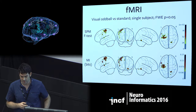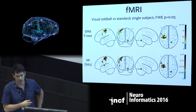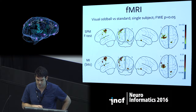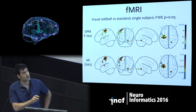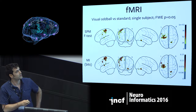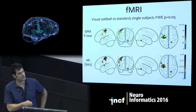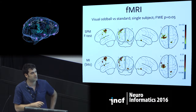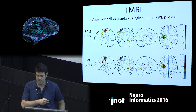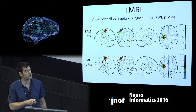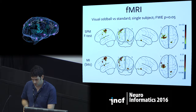Most of the examples I'm going to show today are MEG and EEG, but I just wanted to show a very recent result that's not in the preprint: we can also do it reasonably well on fMRI. This is just a single-subject visual oddball versus standard. This is a standard SPM F-test output with a family-wise error of 5%, and this is the single-voxel mutual information calculated from single-trial betas, done with a permutation test, thresholded with a permutation test, so you can see we don't lose much.